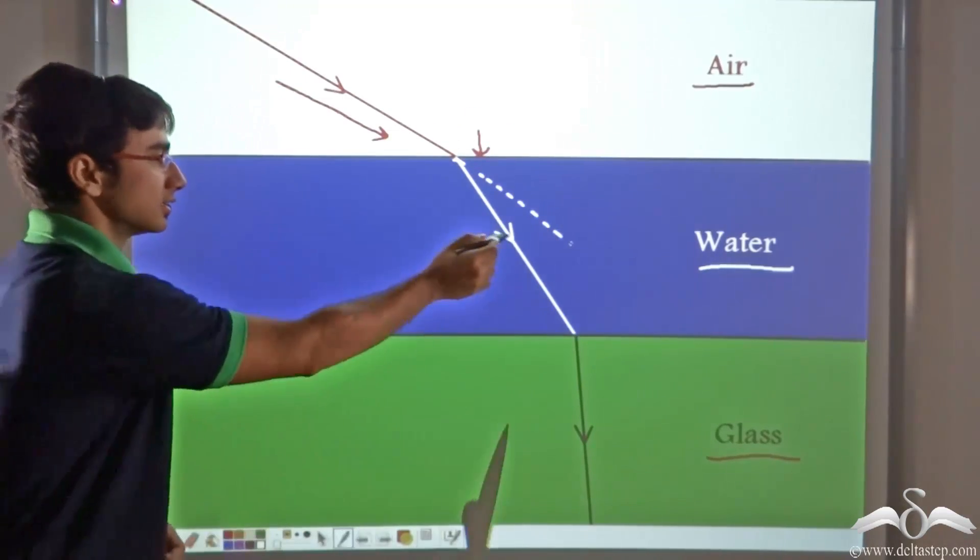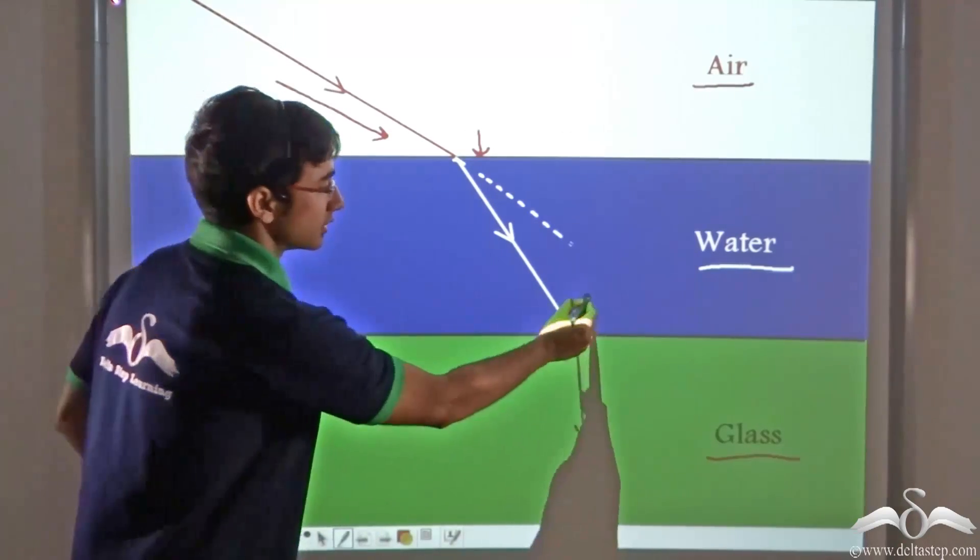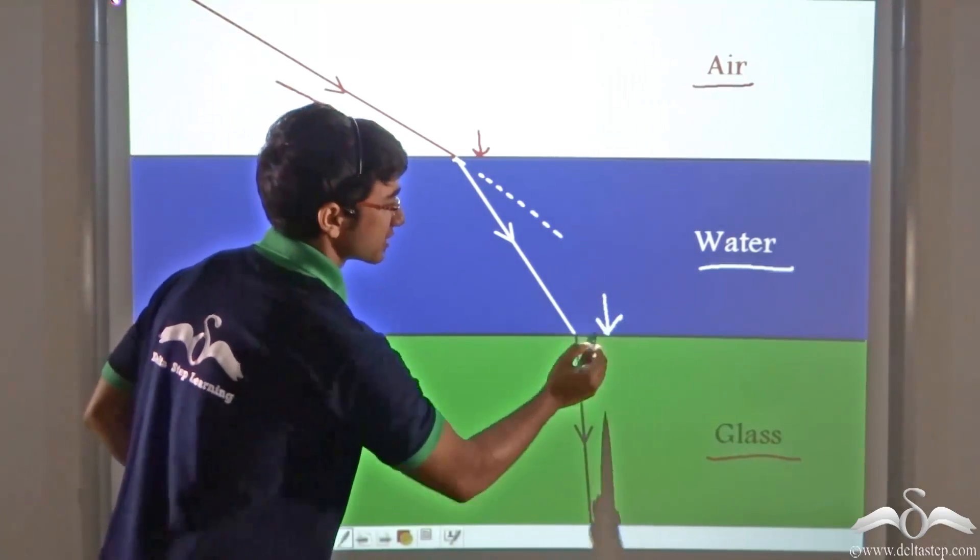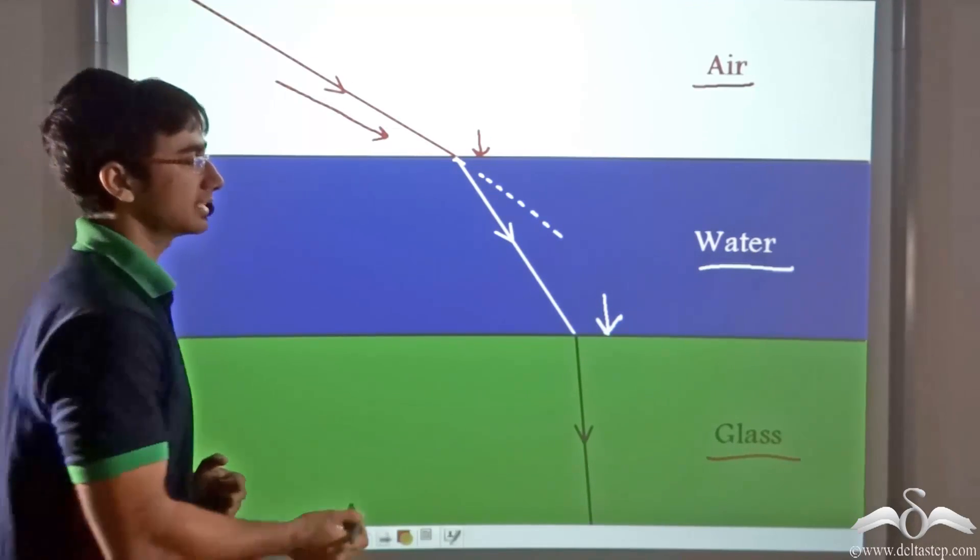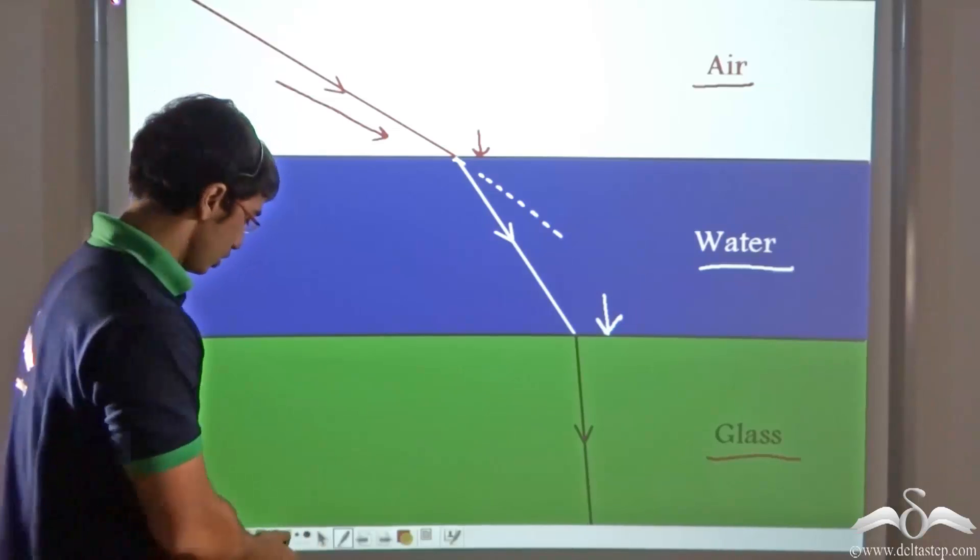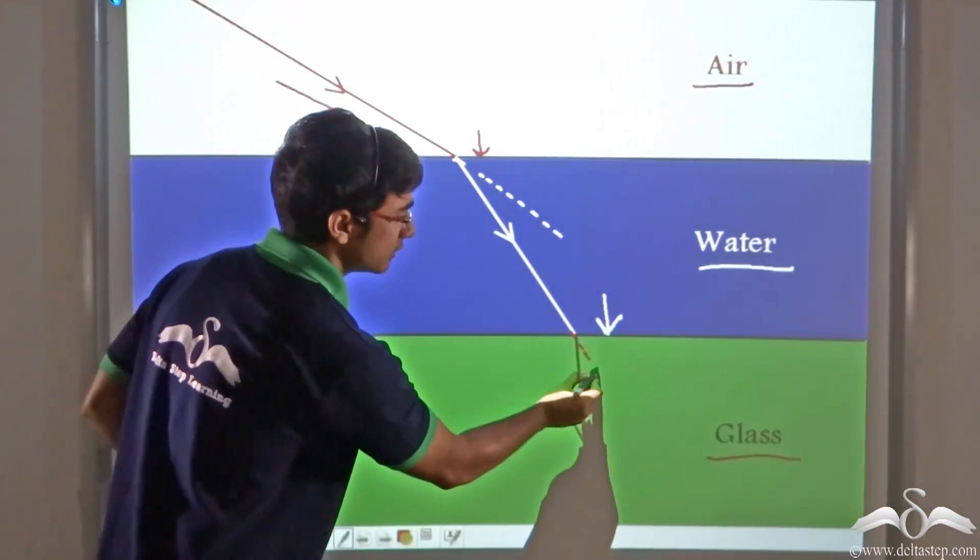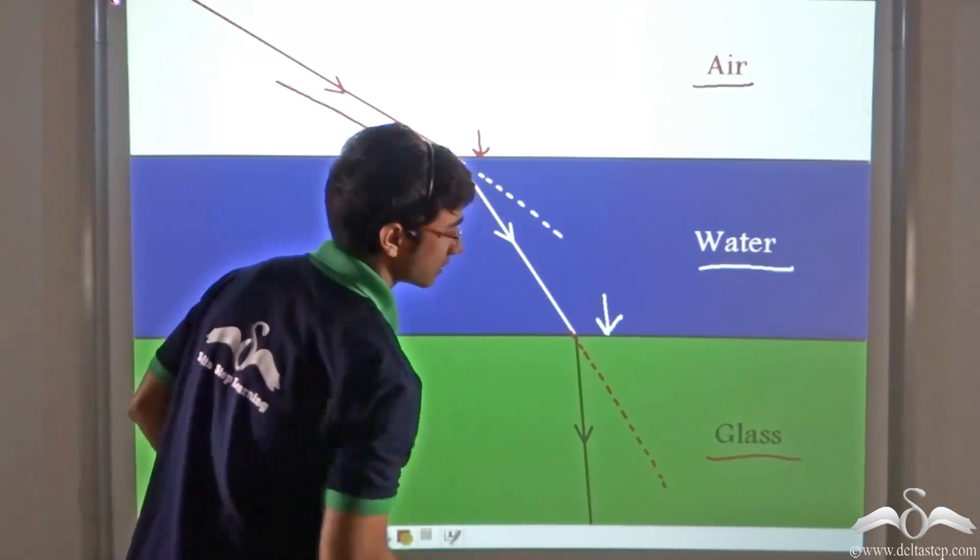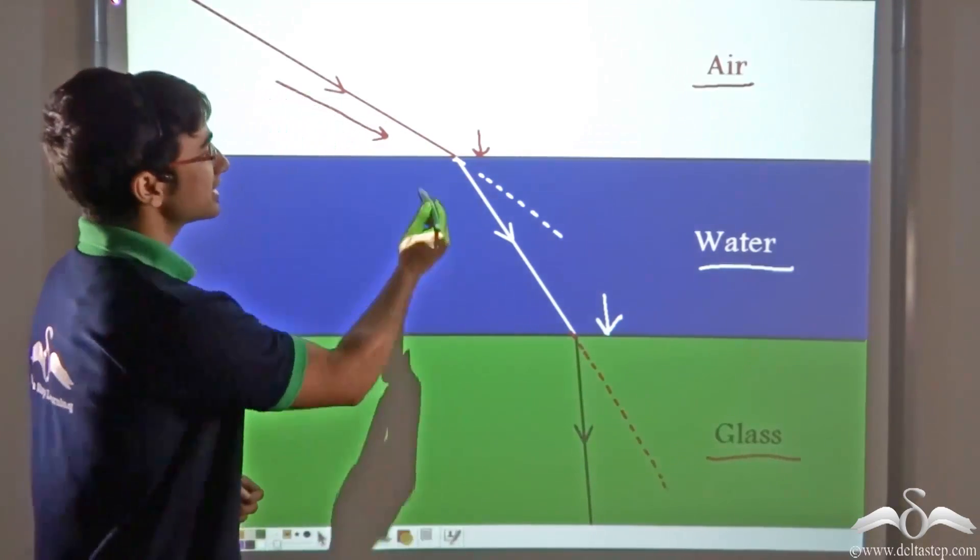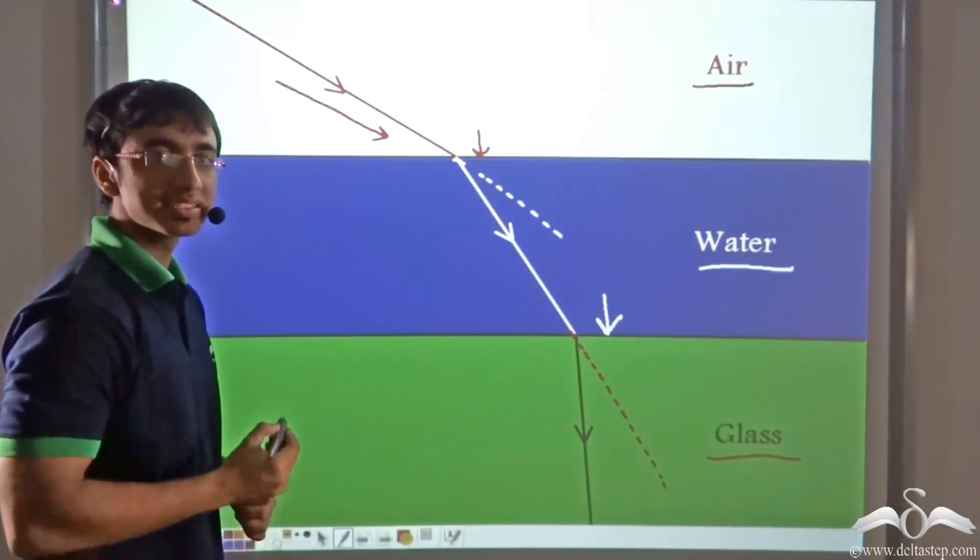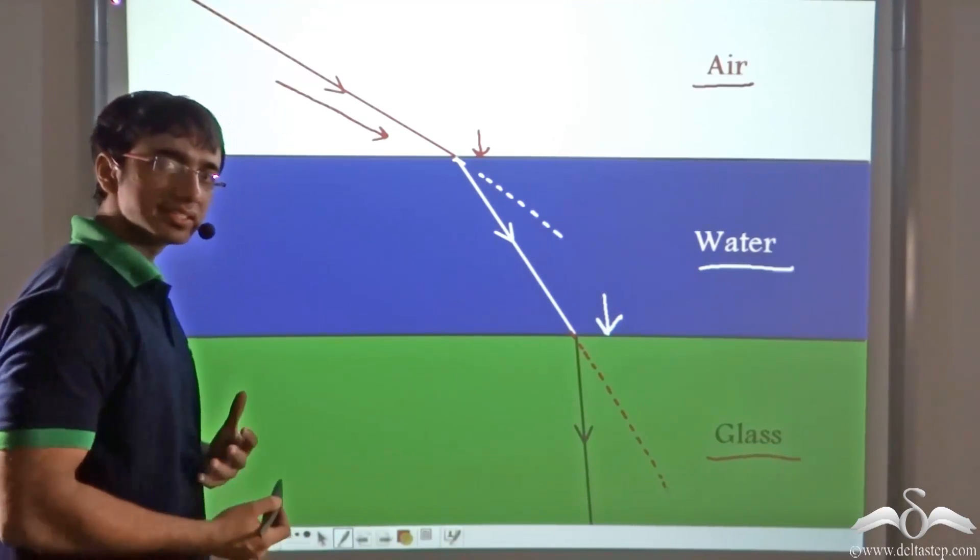Similarly when the ray of light is traveling through water, it hits the water-glass interface. After it hits this interface, there is again a change in medium, that is water to glass. So it does not travel in its original path. Instead it bends again. So whenever there is a change in medium, you can see that the light ray is bending. So what do you think this is called?